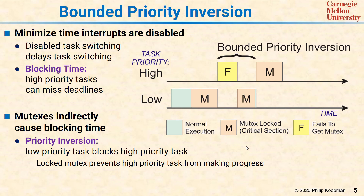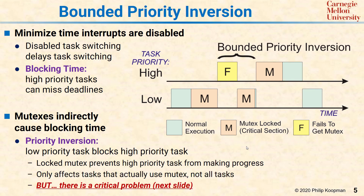This is called bounded priority inversion. As long as you can guarantee the maximum length of time the low priority task needs the mutex, you know the high priority task will never be delayed more than that. Even here, it is priority inversion because the high priority task has to wait for something with lower priority to complete. This particular type of priority inversion only involves tasks that actually use the mutex, not all tasks. So a medium priority task or an even higher priority task, as long as they don't touch the mutex, will run just fine with their established priority.